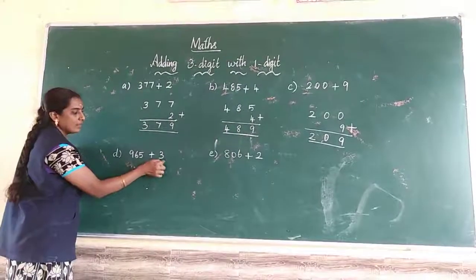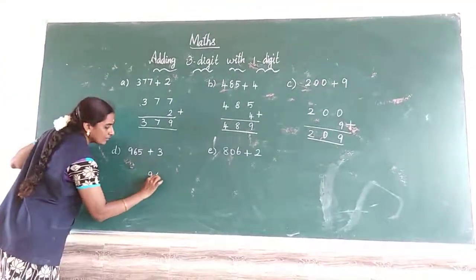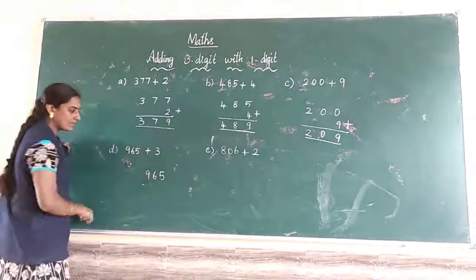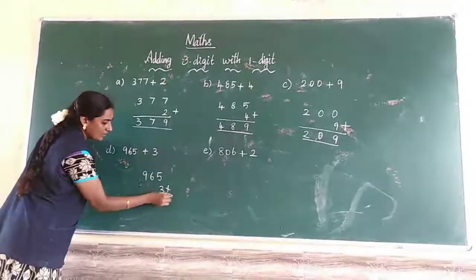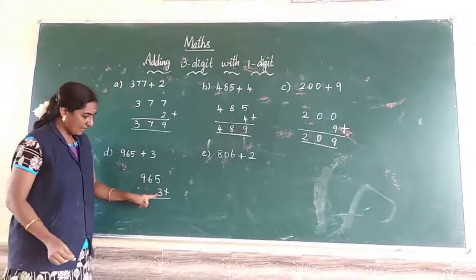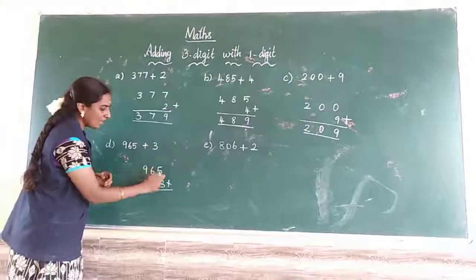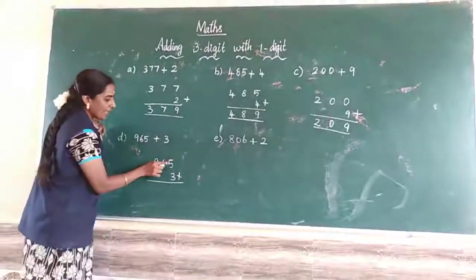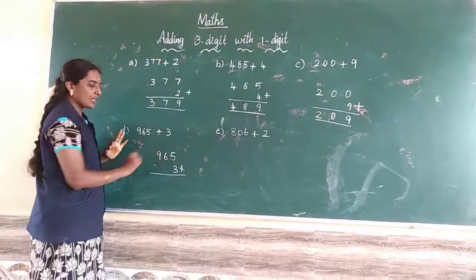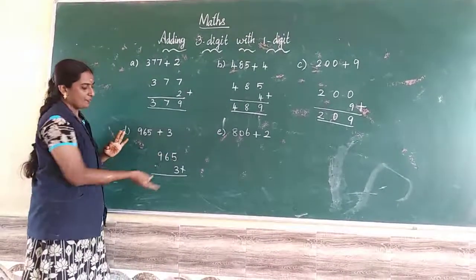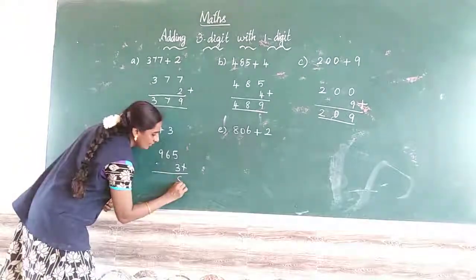965 plus 3. First we start from this number. 965 plus 1 space number is 3. So 5 and 3. Take the 5 and 3. Every time we have to start from the 1 space. 5 in the mind, 3 in the fingers. What number after? 5 after: 6, 7, 8.